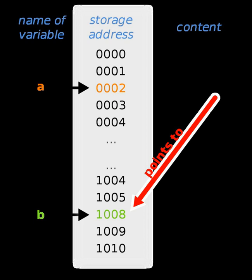As an analogy, a page number in a book's index could be considered a pointer to the corresponding page. Dereferencing such a pointer would be done by flipping to the page with the given page number and reading the text found on that page.